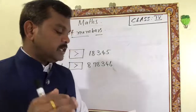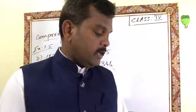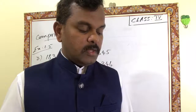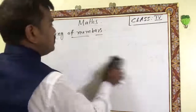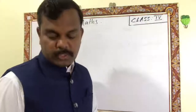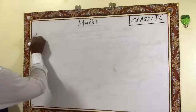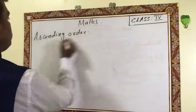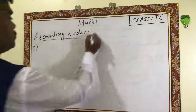Next, ascending order and descending order from the book — that is already explained in lesson video one. This lesson covers large numbers. For the b section I will explain. Exercise 1.5, last question b — ascending order.